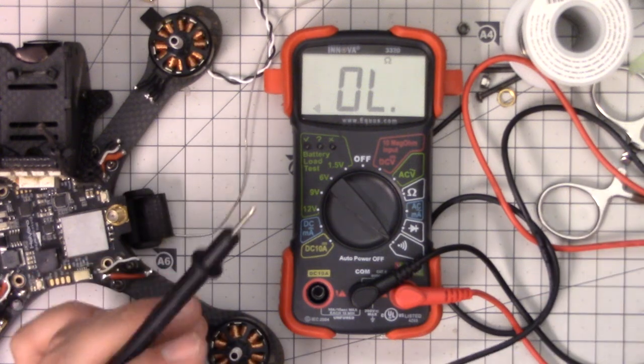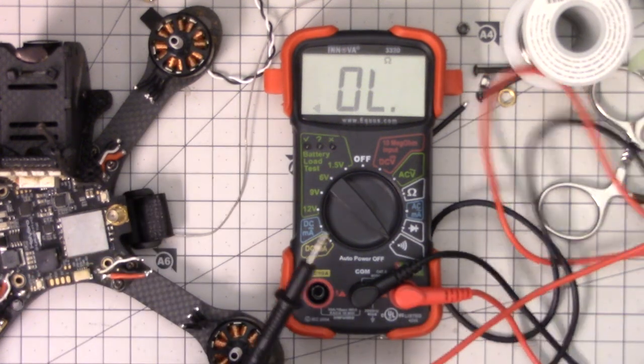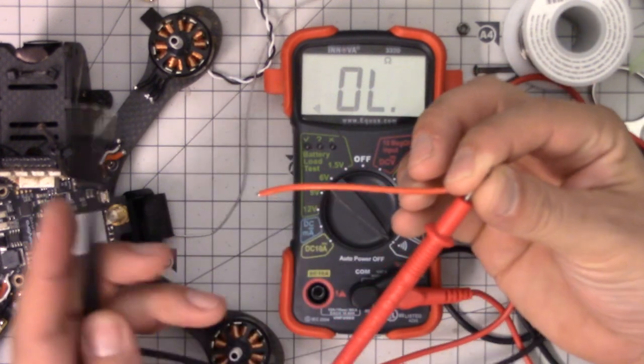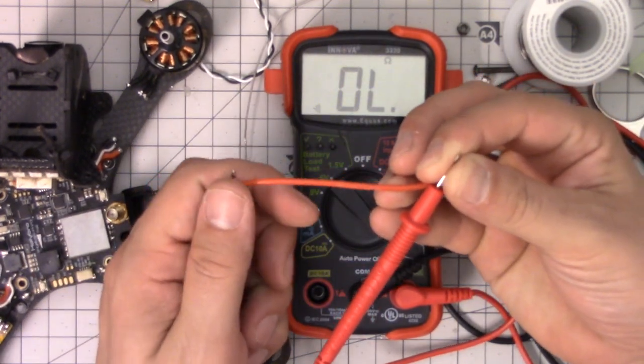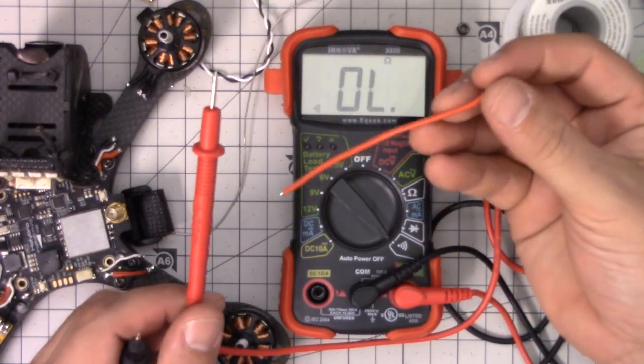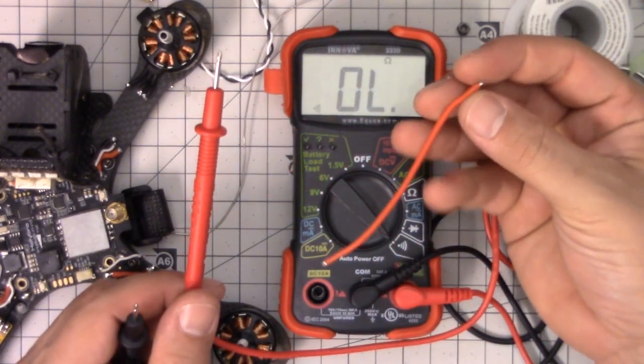But if I take a piece of wire like this piece of wire here and I touch the leads to it, so I'm touching the lead one end and the other end, I get a beep. And that's telling us, shocker—no pun intended—electricity will flow through this wire.